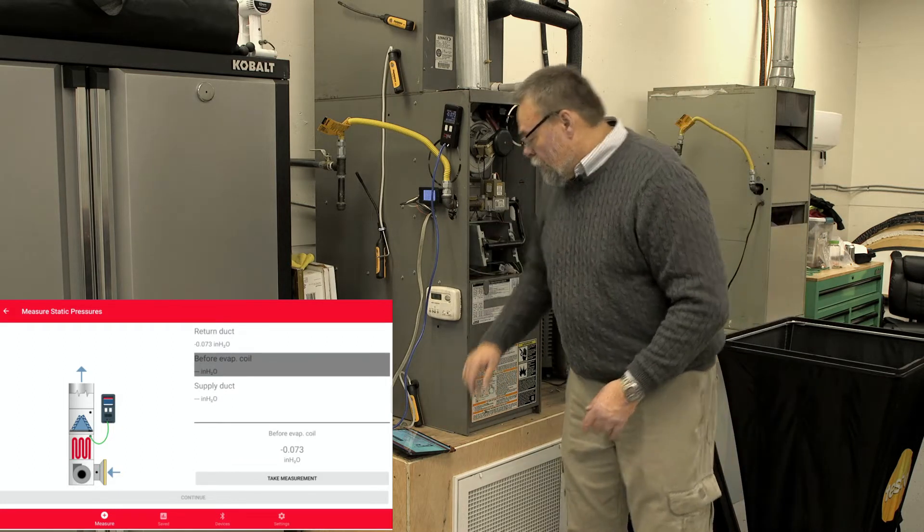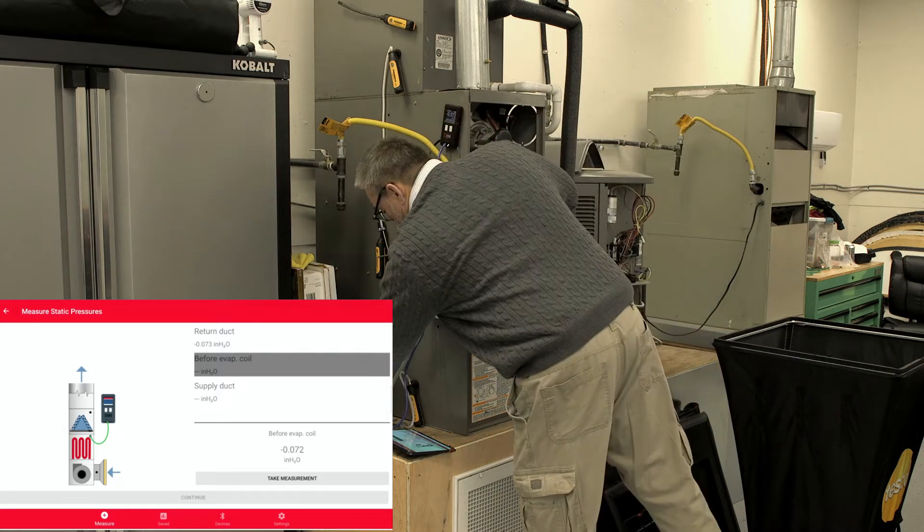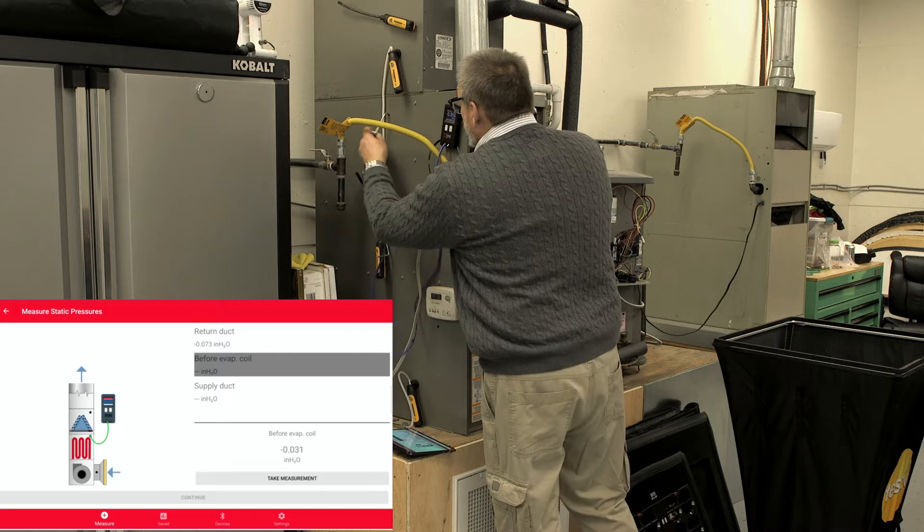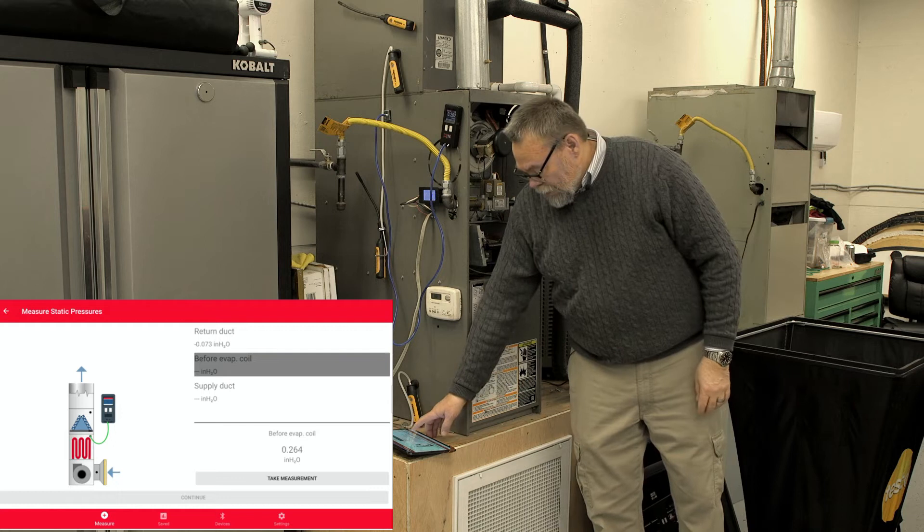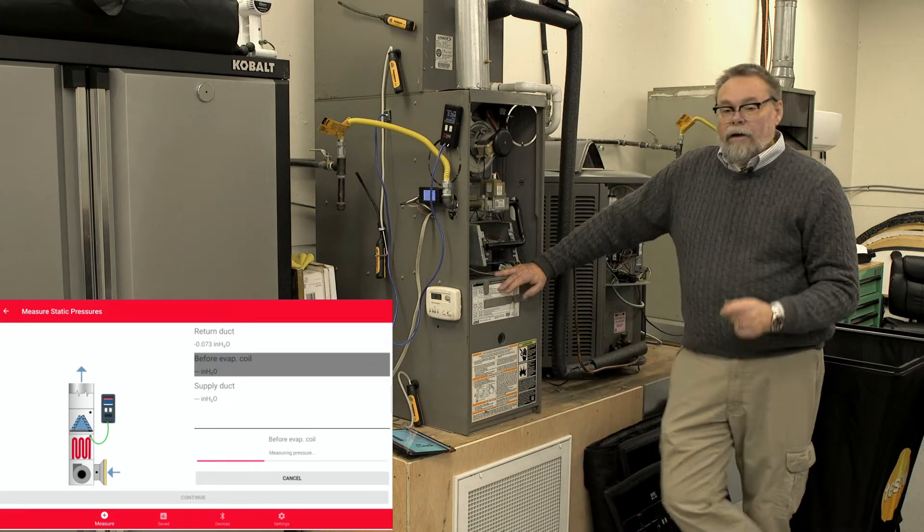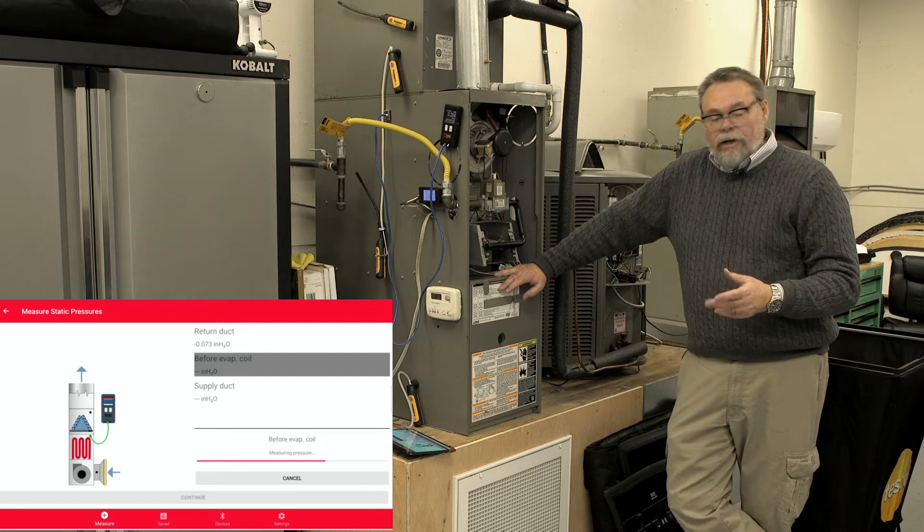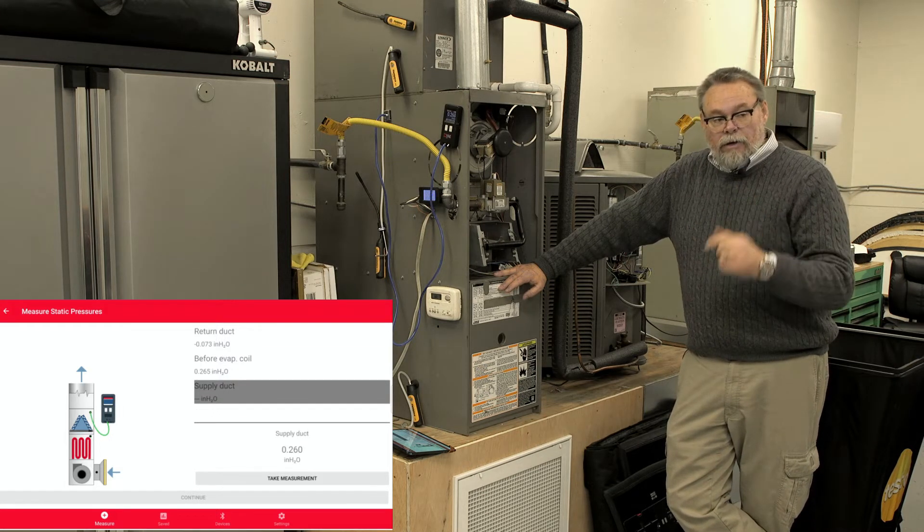Now it tells me I need to move my probe up to just before the coil. So I'll take it out, put it in just before the coil, and we're good to go there. Once I got it in place, I'm going to hit Take Measurement. Now it's measuring that portion of it. It only takes a second. That's done.